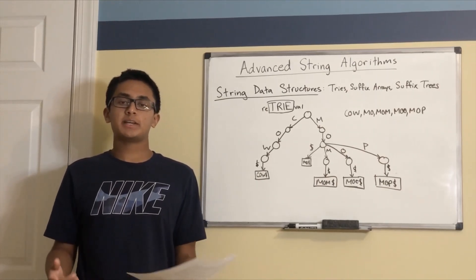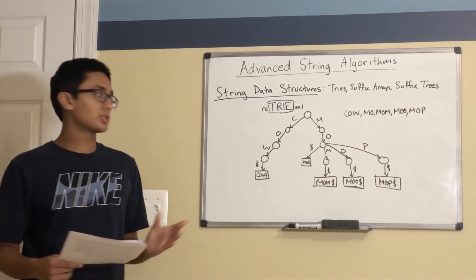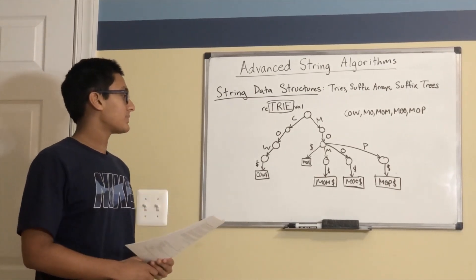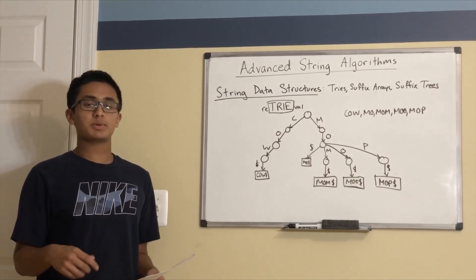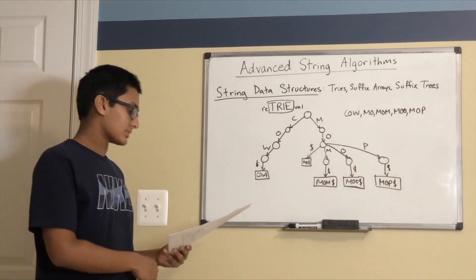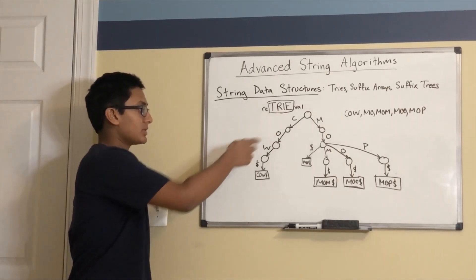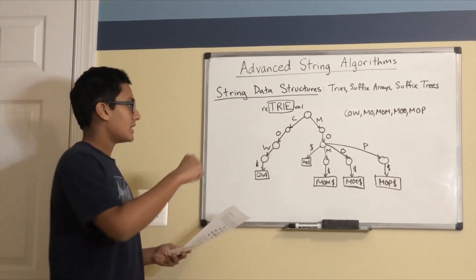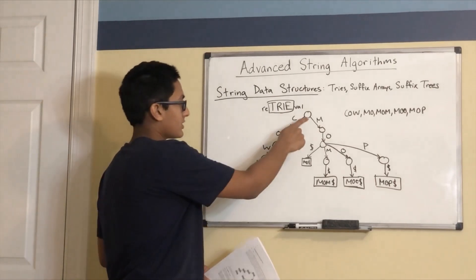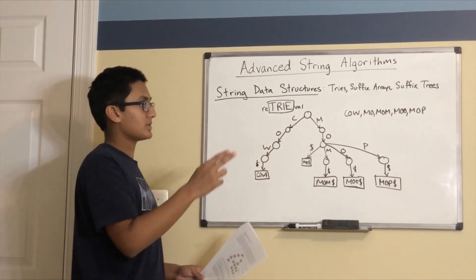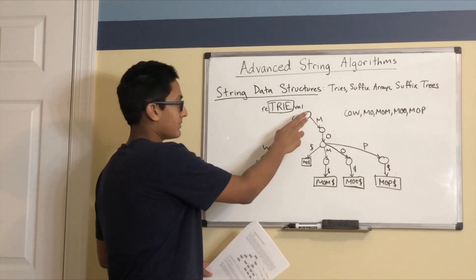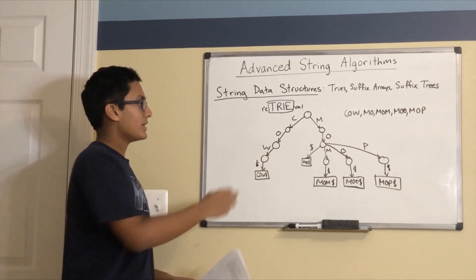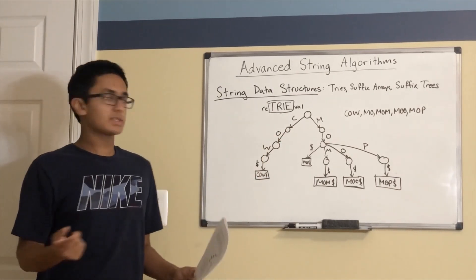Next we'll look at string data structures. We're going to cover three different string data structures: tries, suffix arrays, and suffix trees. A trie is a tree-based data structure that supports linear time lookup and insertion. Each edge is labeled with a character, and every path from the root to a certain vertex represents a prefix. For example, from the root to the node at depth level 2, we have the prefix CO, which is a prefix of the string CO.